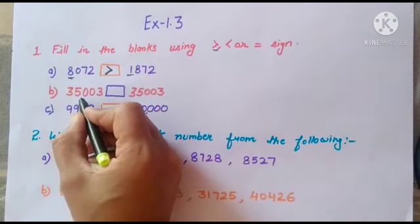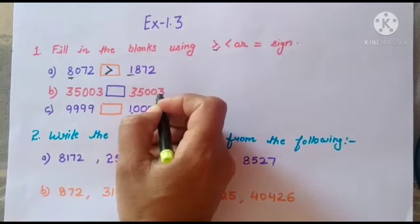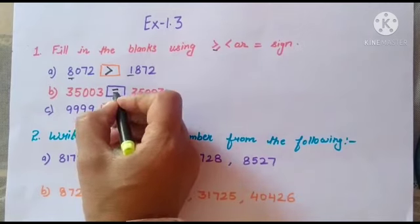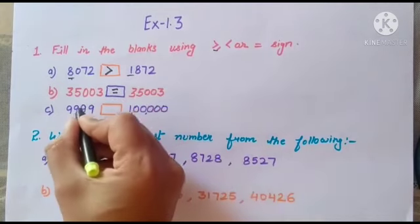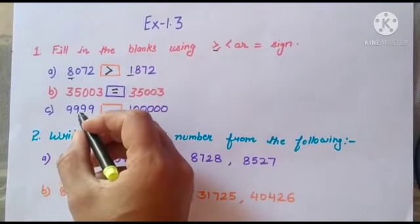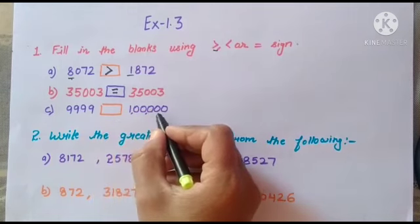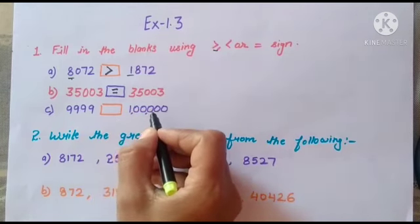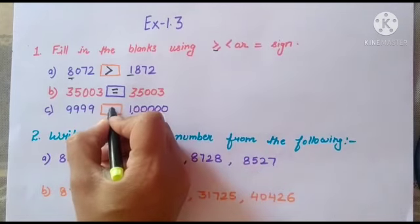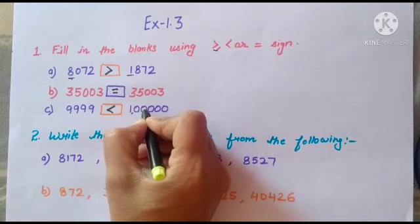Next is 35003 and 35003 — both are equal, so we put the equal sign. Then 9999 and 1 lakh: 1 lakh is greater, so the mouth of the sign will open toward 1 lakh, meaning we put the less-than sign after 9999.